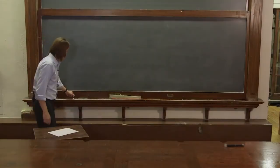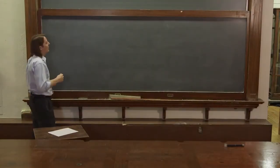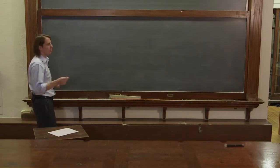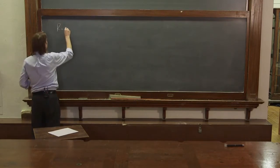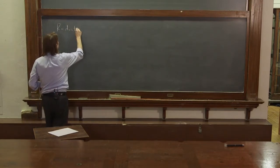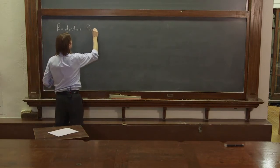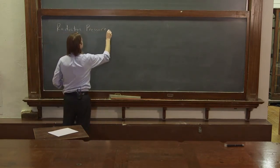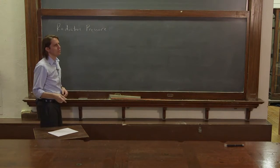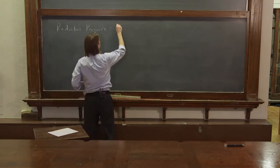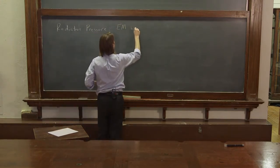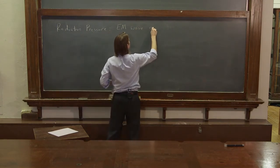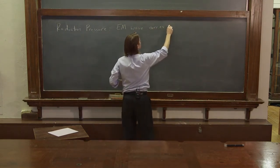One more characteristic of electromagnetic plane waves that's kind of interesting is radiation pressure. And radiation pressure occurs because an EM wave, electromagnetic wave, carries momentum.